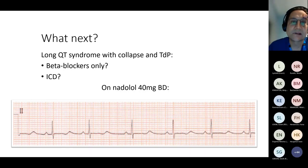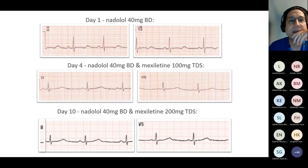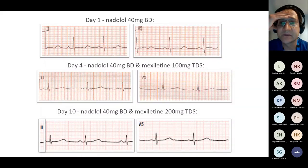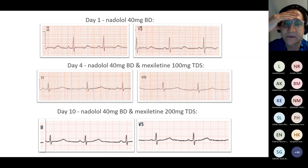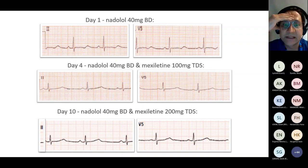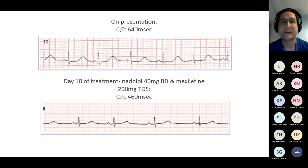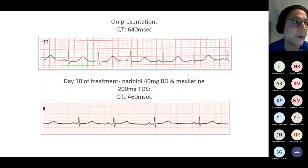This is her on nadolol. Interestingly, Jan Till from the Royal Brompton was helping cover that weekend and came over and said perhaps this is Long QT 3 — why don't we try shortening with mexiletine? And we did, and it worked. Mexiletine really did bring in the QT interval. This is a comparison on presentation and on a decent dose of mexiletine, which is a sodium channel blocker.